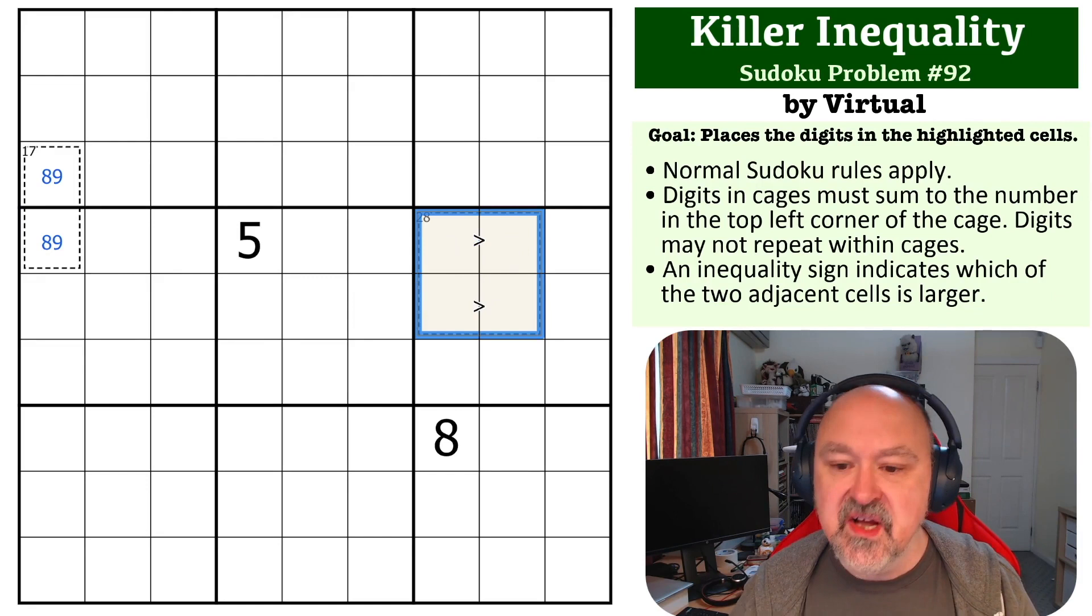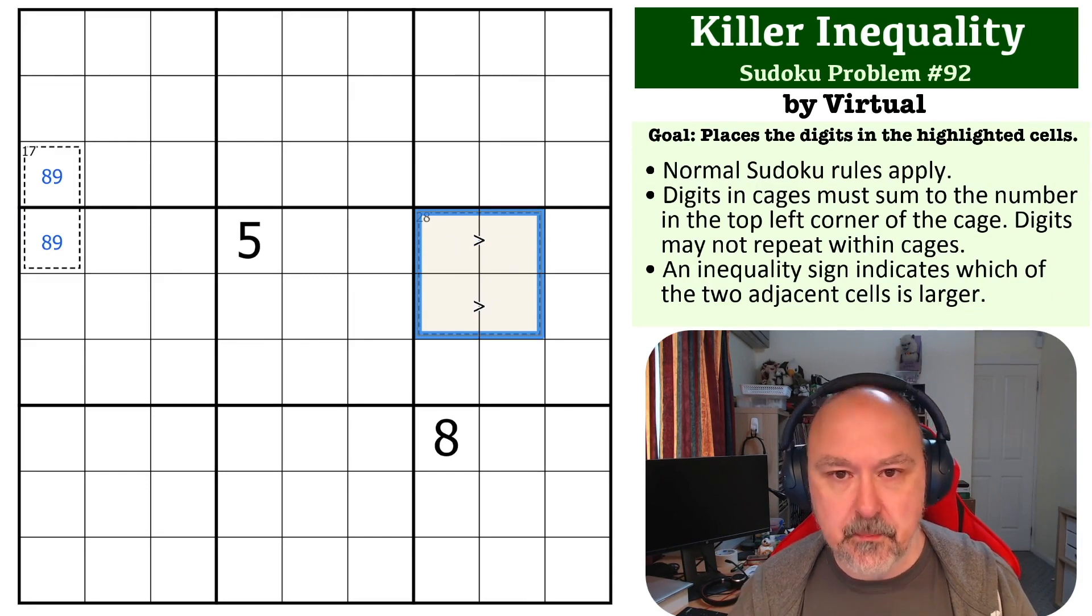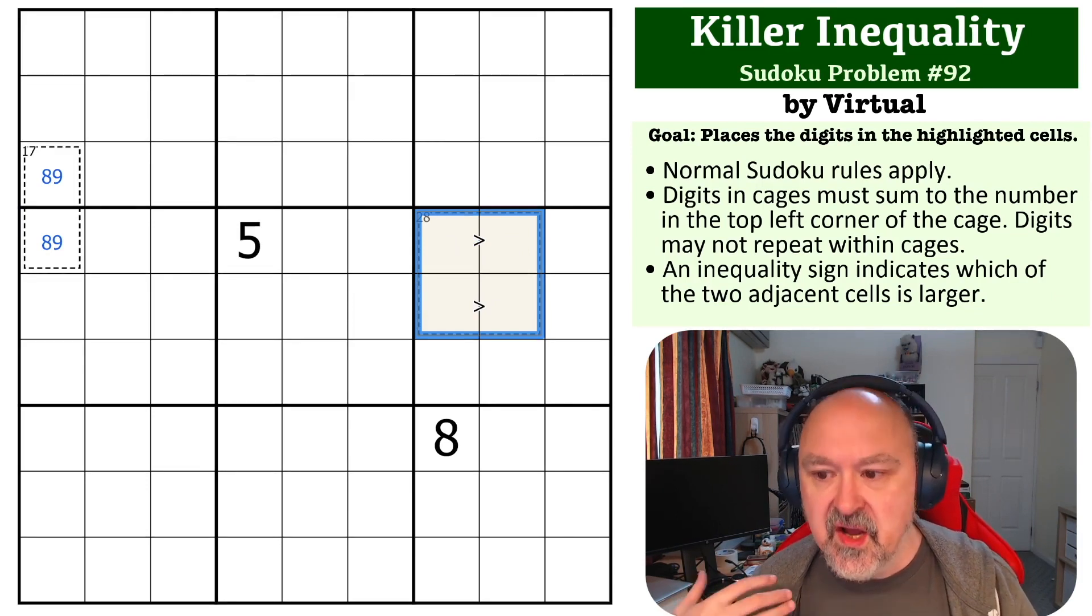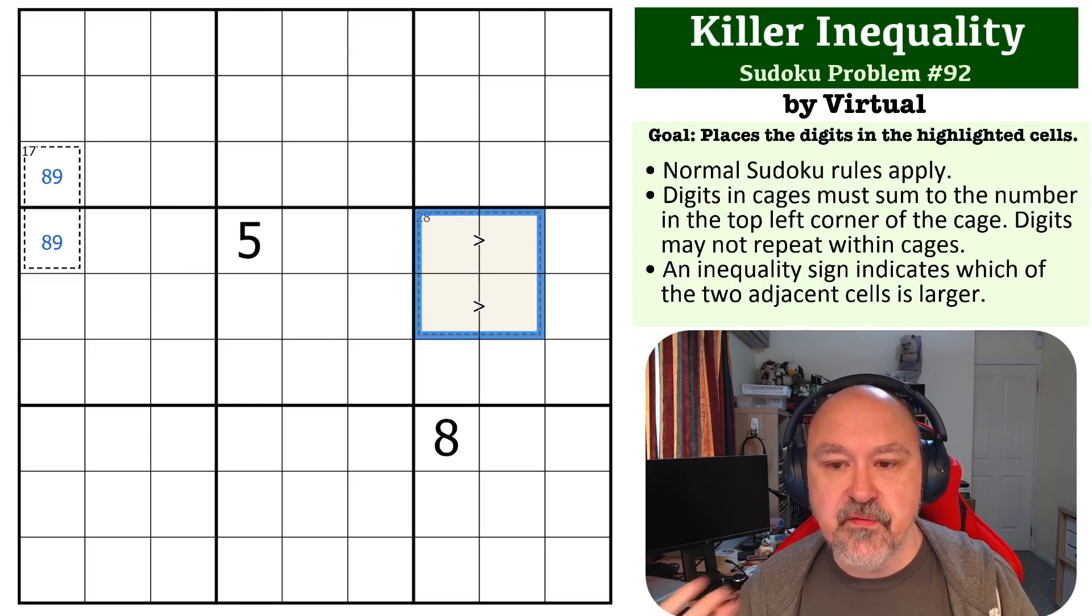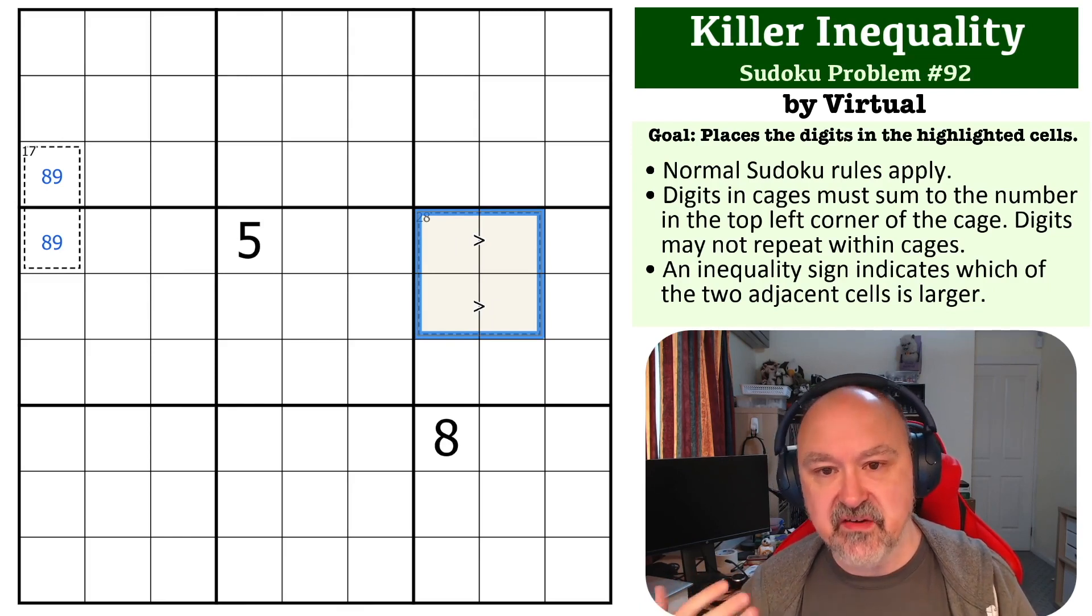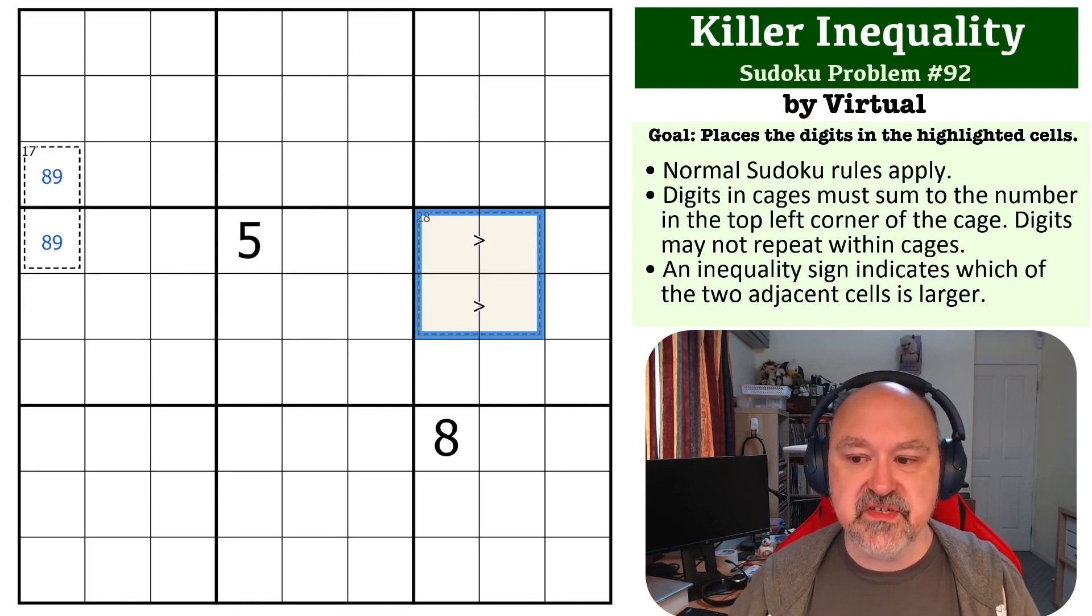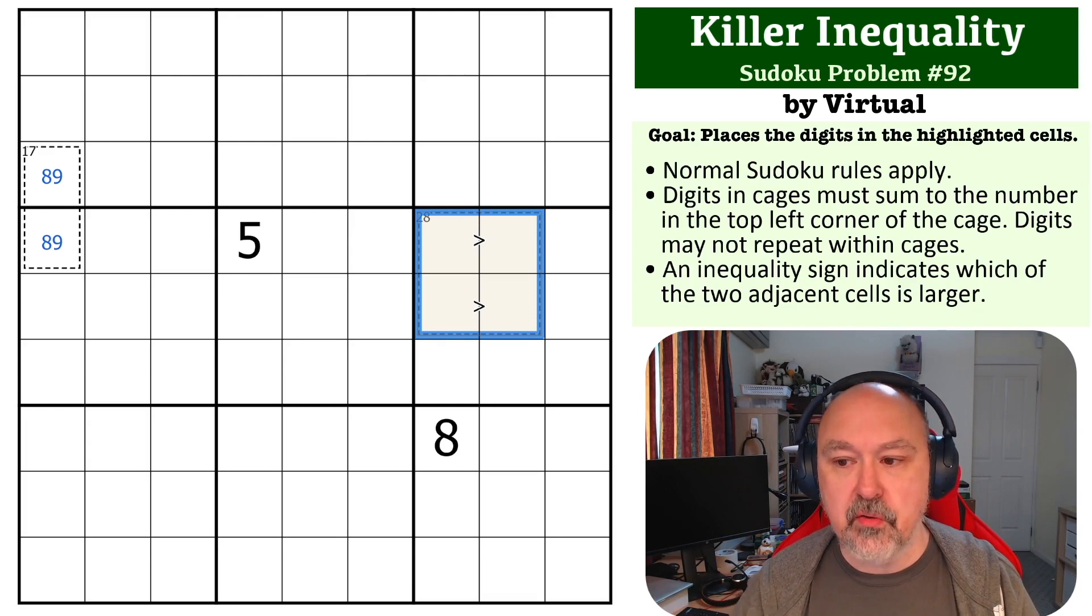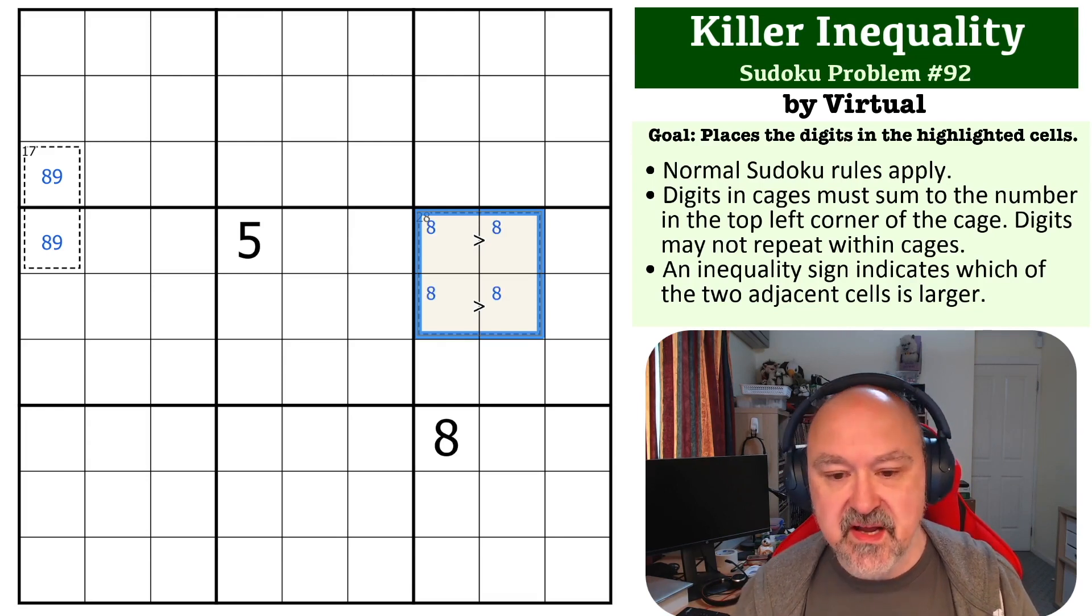But a 28 cage, there's only two ways of making up a 28 cage, and that is with 4789 or 5689. You must have an 8 and a 9 in a 28 cage. If you don't have either of those digits, you will not get to the total of 28. So there must be an 8 and a 9 in this cage.